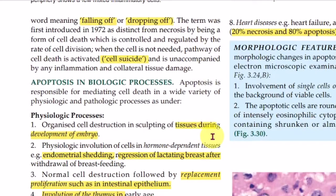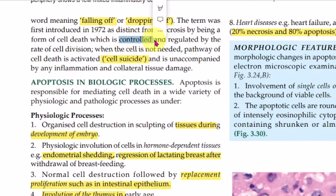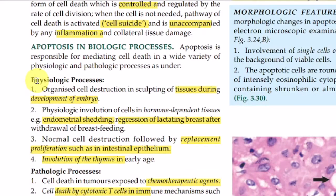Just like a leaf falls from a tree, the same thing happens in our body — from the tissue, from the organ, particular cells are going to fall off. As cells take birth, it is certain that they are going to die. There are two main things which make these cells die: one is an internal genetic program, and another is the surrounding environmental condition, such that cells commit suicide.